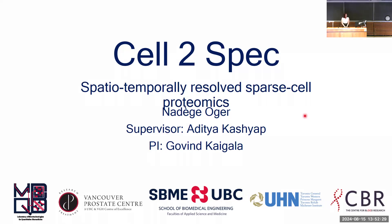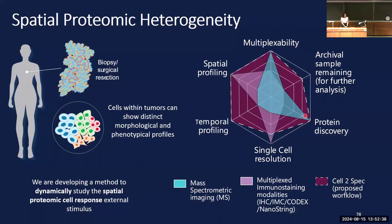My name is Nadege Auger, and this is my project, Cell2Spec: a method for spatiotemporally resolved single-cell proteomics. Within most tumors, we tend to find different populations of cancerous cells that communicate with each other within space. Often after killing off one population with treatment, another subpopulation can arise and take its place. There has therefore been an increased focus on studying different subpopulations within tumors. In my project specifically, we're developing a method to study spatial proteomics, as proteins are how cells communicate with one another in space, which can really impact how they're going to react to or evade treatments.